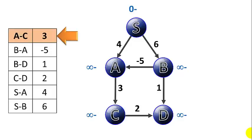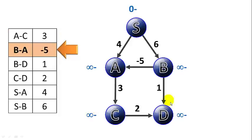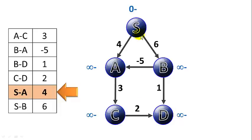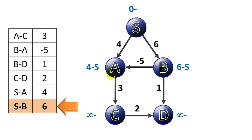Now we'll start relaxing edges. Edge A to C with a distance of 3: the distance to A is infinity, so infinity plus 3 still gives infinity — no improvement. The same applies to the next three edges; without paths to B or C yet, those relaxations don't help. S to A with a distance of 4: we can reach A with a distance of 4, so we update A's distance to 4 and its predecessor to S. S to B of 6: we update B's distance to 6 and its predecessor to S. That finishes iteration 1 — we found paths to A and B, but not C and D yet.